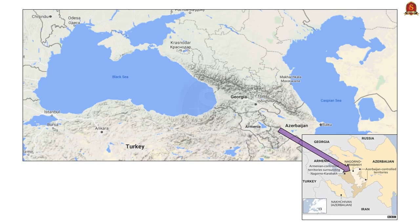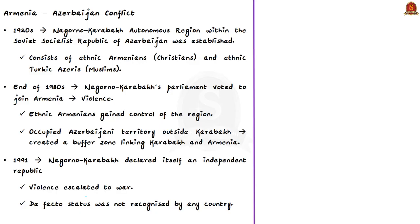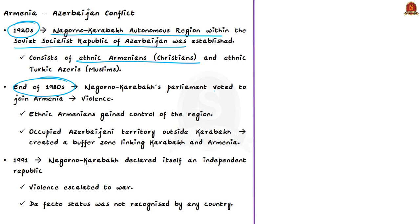Both Armenia and Azerbaijan were once part of the USSR. The Nagorno-Karabakh region was part of the Russian empire in the 19th century. After the end of World War I and the Bolshevik revolution, Soviet rulers established the Nagorno-Karabakh autonomous region within the Soviet Socialist Republic of Azerbaijan in the early 1920s. The region is populated by ethnic Armenians who are Christians and ethnic Turkic Azeris who are Muslims, with ethnic Armenians as the majority. Though there were clashes, they lived relatively peacefully until the dissolution of the Soviet Union. In the late 1980s, Nagorno-Karabakh's parliament voted to join Armenia, triggering violence in which ethnic Armenians gained control and occupied Azerbaijani territory outside Karabakh, creating a buffer zone linking Karabakh and Armenia.